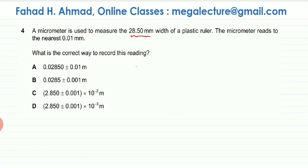Now the correct way to record a value is you write the value which is given over here and you add in the error which is going to be in this case 0.01 millimeters. So I'm going to do just that: 28.50 plus minus the error 0.01 millimeters. So this one is in millimeters and this one is also in millimeters.